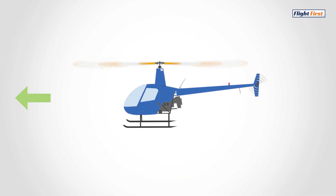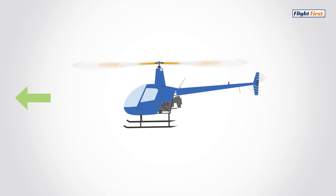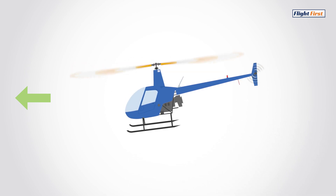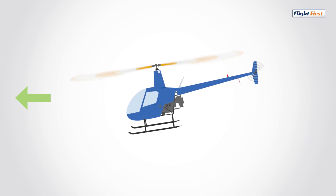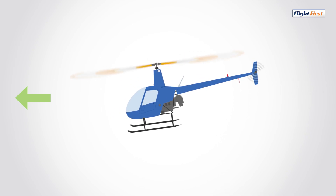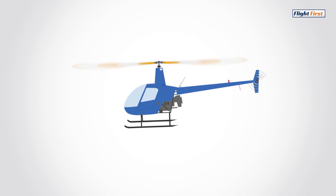Thrust is a forward force produced by the main rotor blades. In forward flight, the helicopter's main rotor is actually tilted slightly forward to create forward thrust. If the main rotor were perfectly horizontal, the helicopter would have no forward thrust and wouldn't be able to move forward.